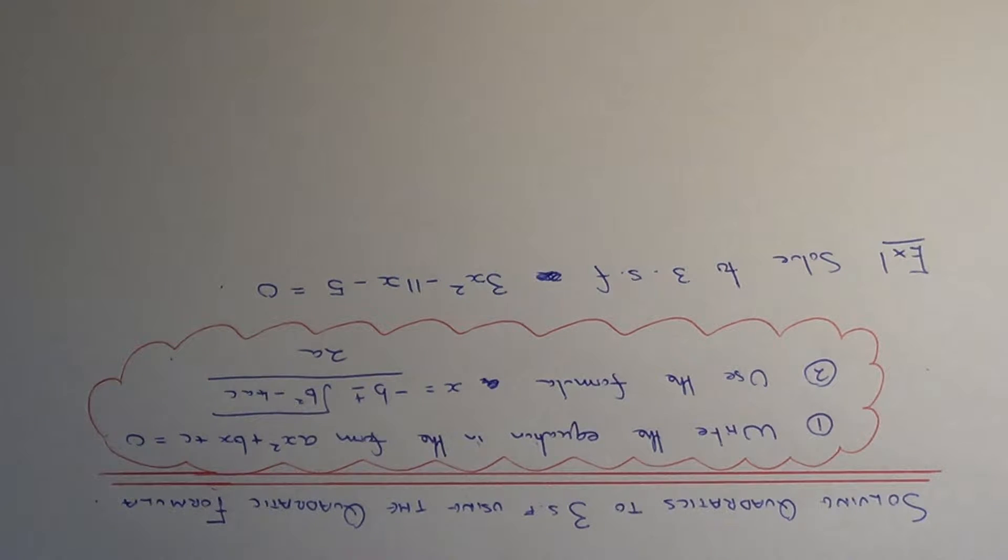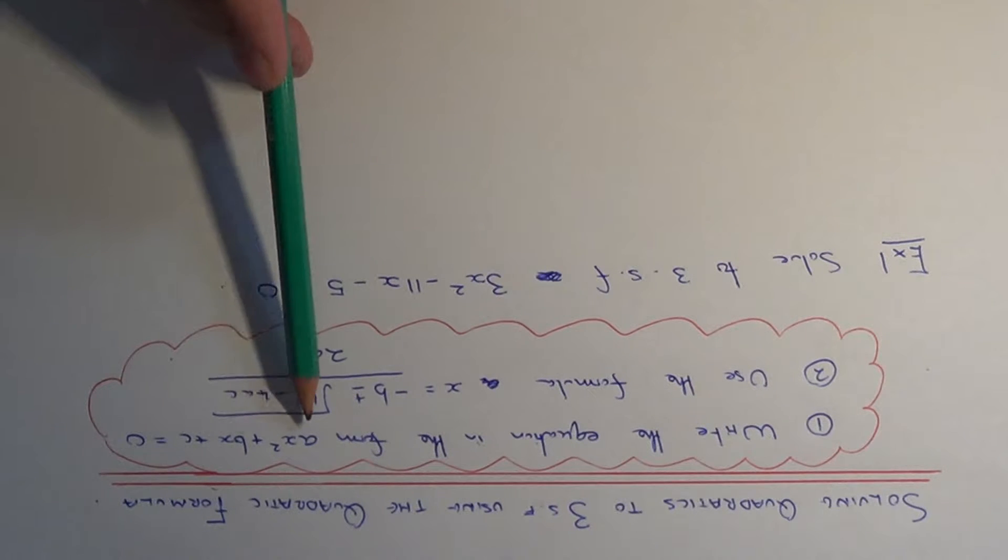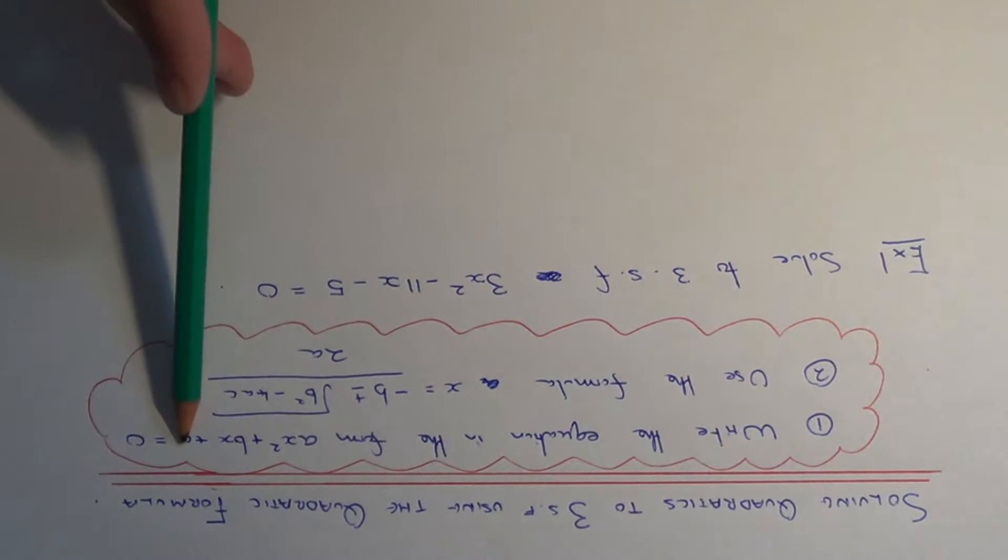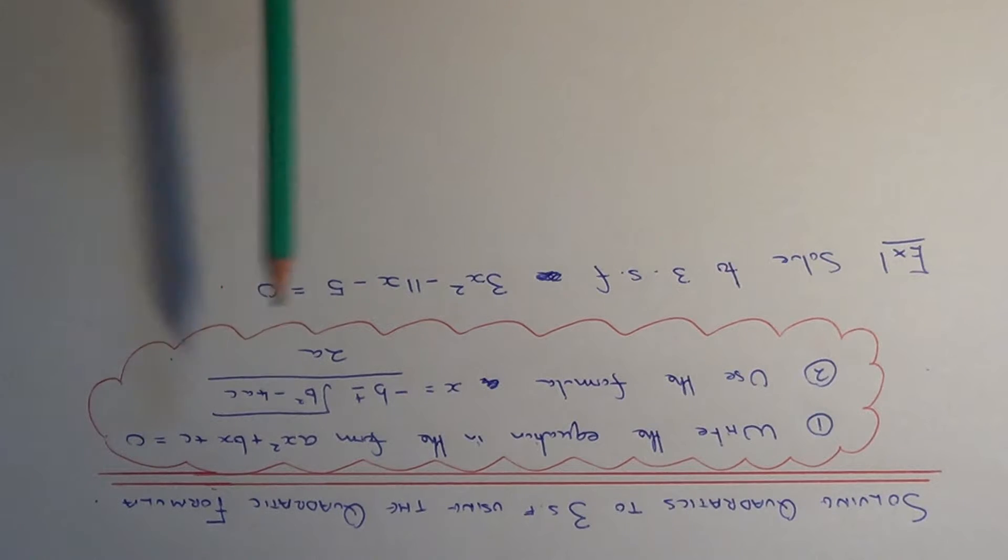The two steps you need to do are: first, make sure that the quadratic is written in the form ax squared plus bx plus c equals zero. All the terms need to be on the left-hand side and it needs to equal zero on the right-hand side.